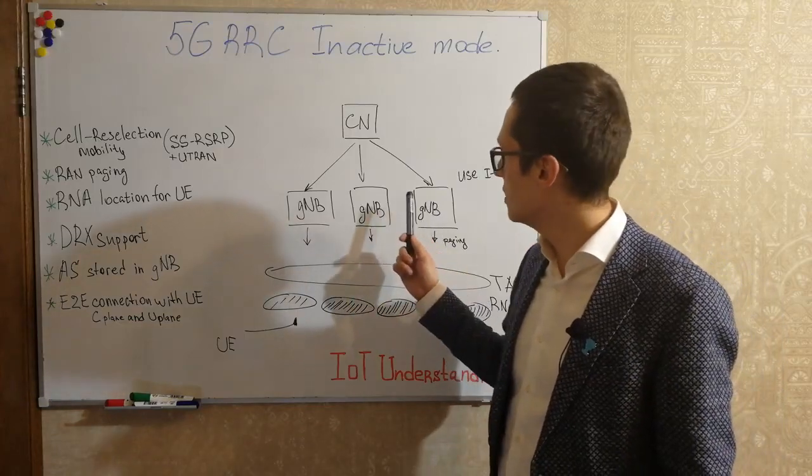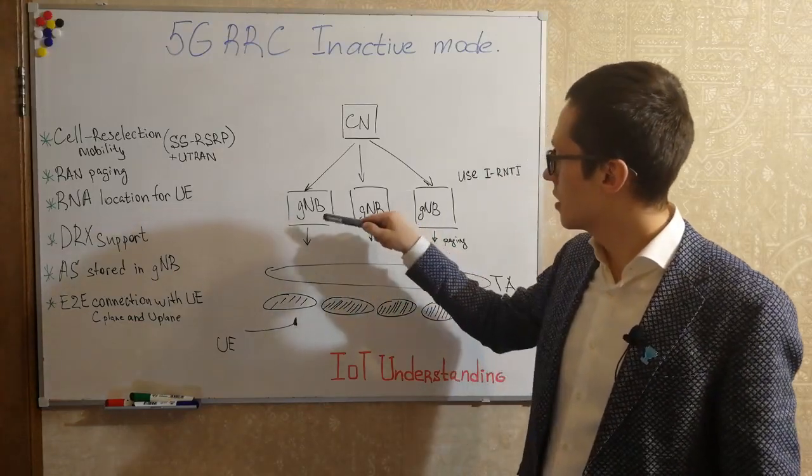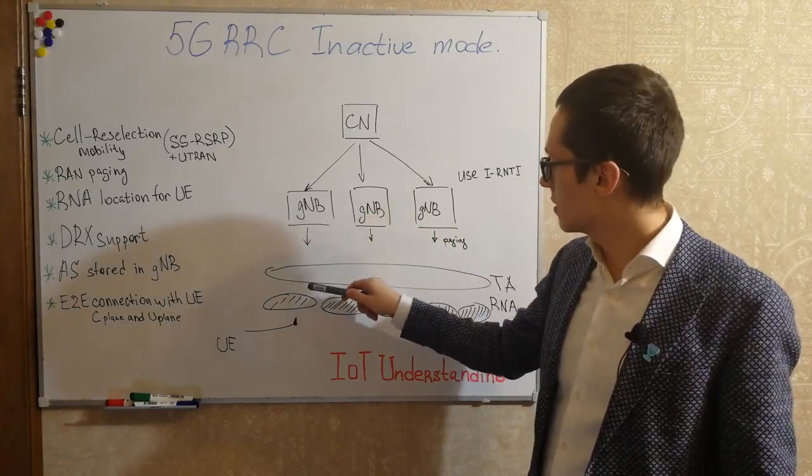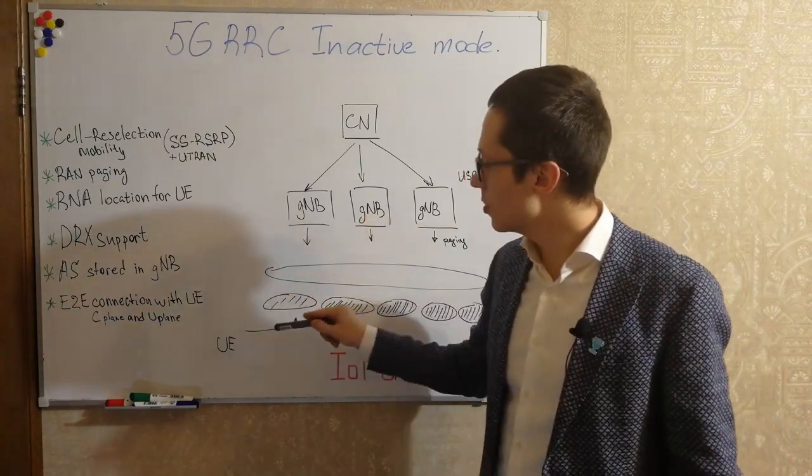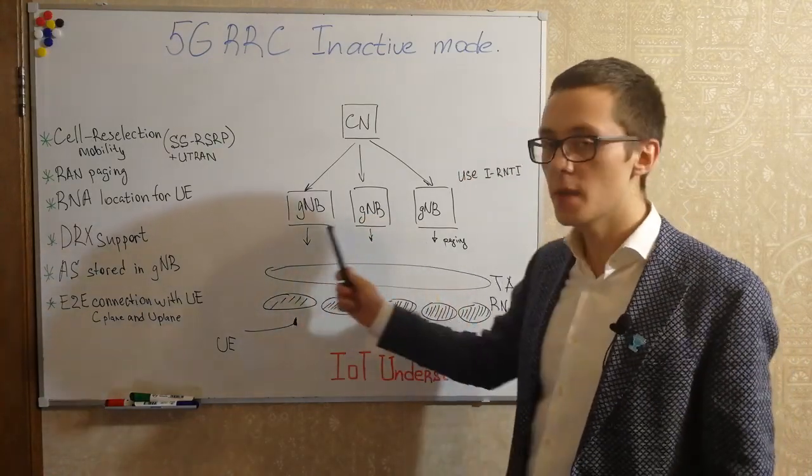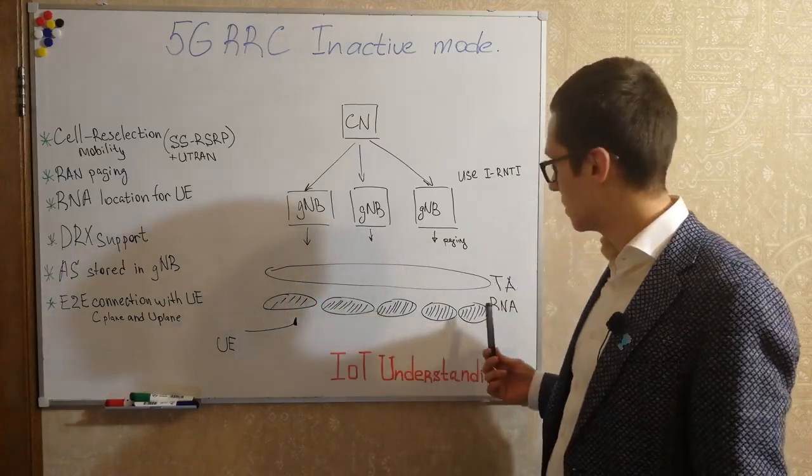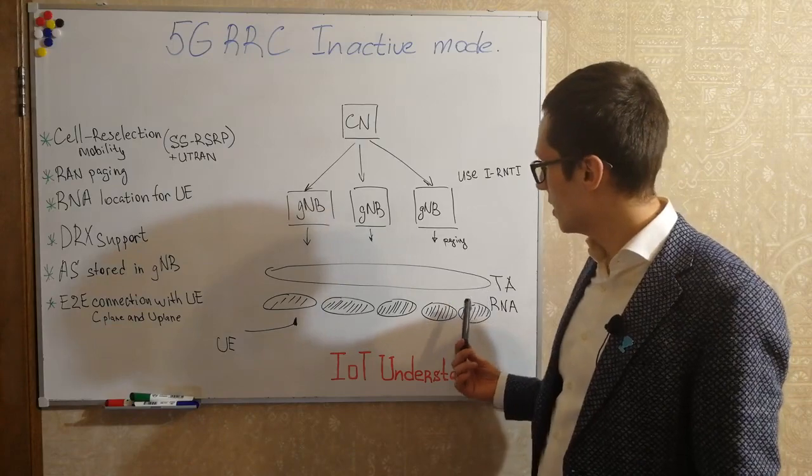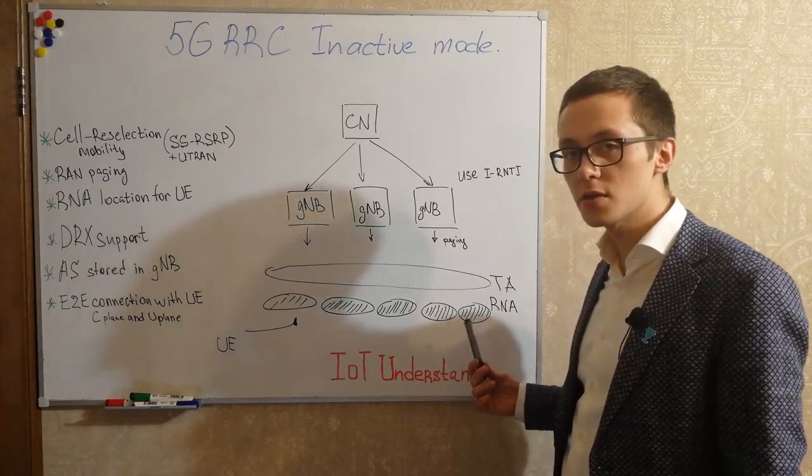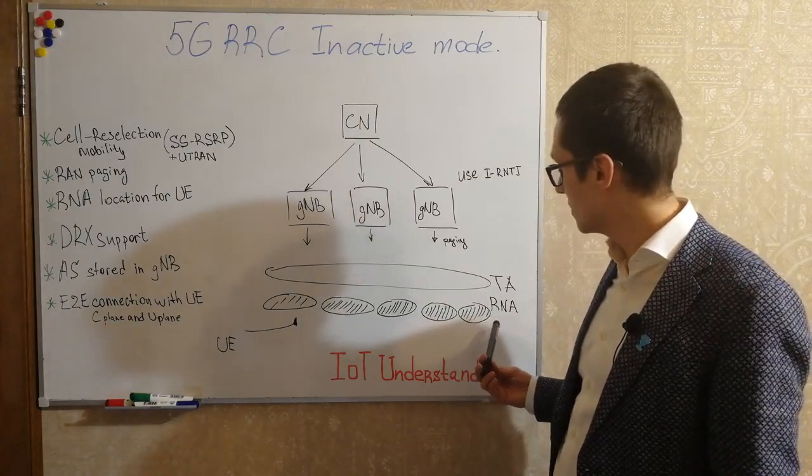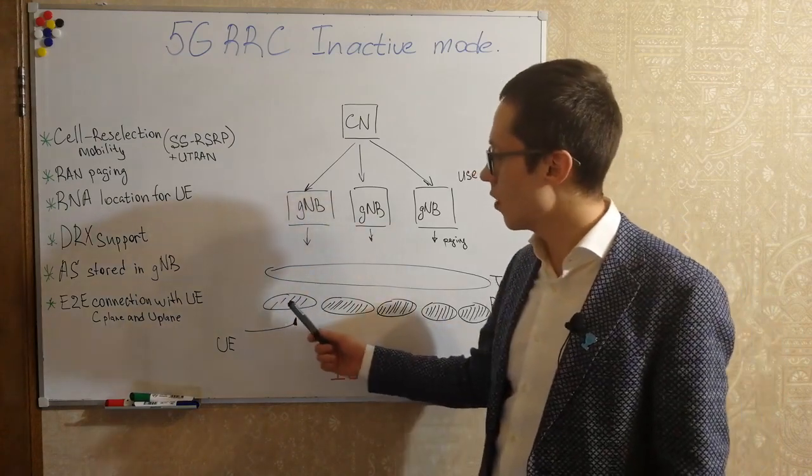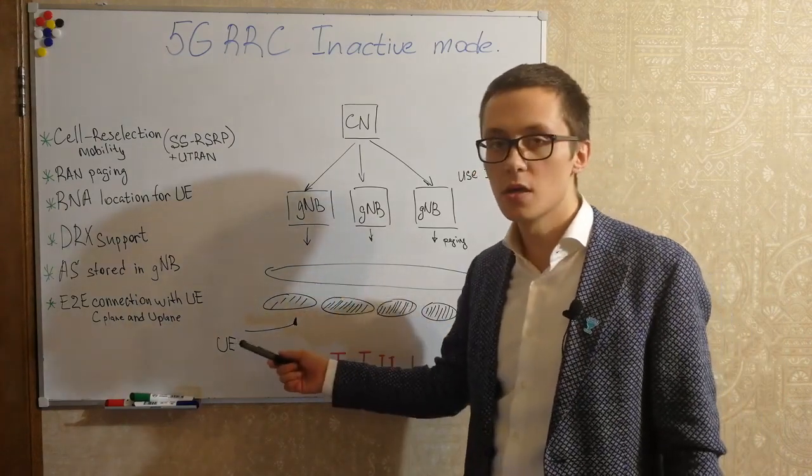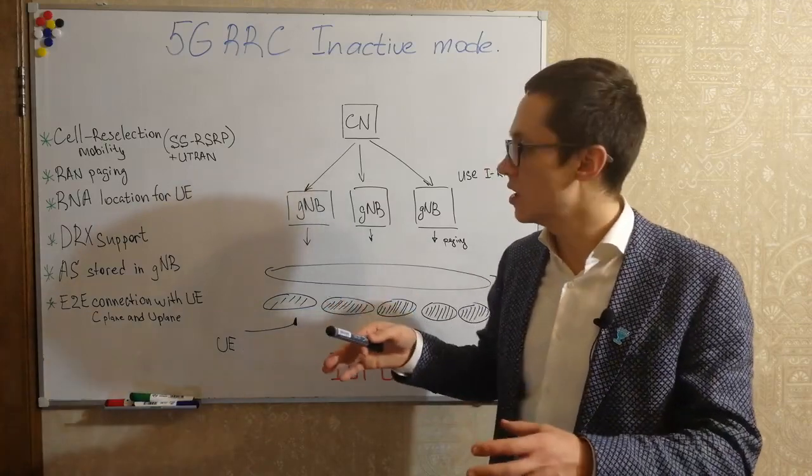And what's more interesting, GnodeB paging user equipment not in a big area such as tracking area, but in a much more smaller areas called RAN notification area. This area is smaller, so GnodeB may do it in a more precise way.